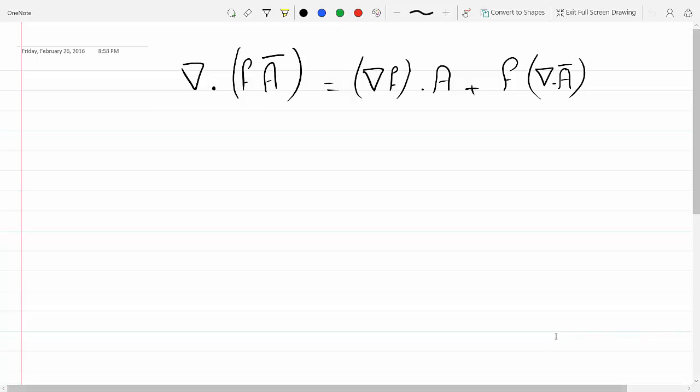Okay, so in this recording I will prove one of the identities in vector calculus that will be useful in various chapters in electrodynamics. So f is a scalar function and A is a vector function, and I will prove the following identity.